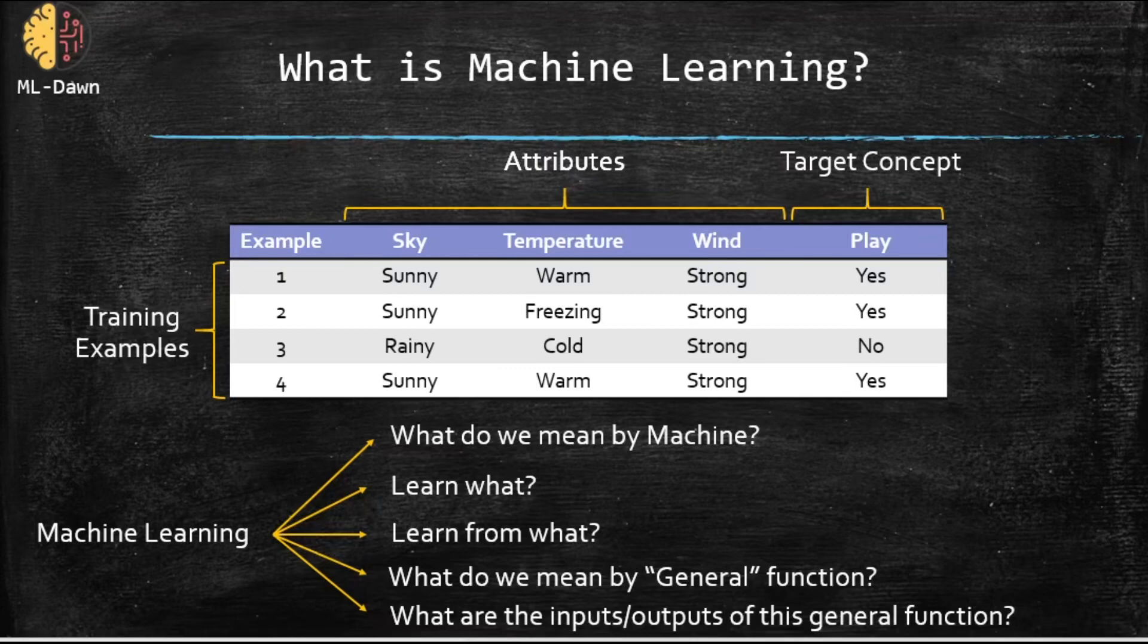And what are the inputs and outputs of this general function? So the inputs would be the training examples, or basically examples, they could be also test examples, and the output would be the prediction, play, which has two values, yes or no.